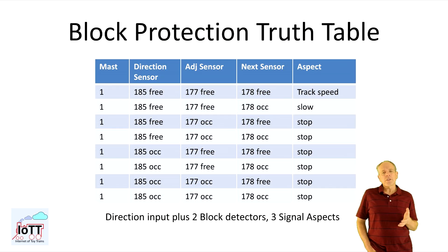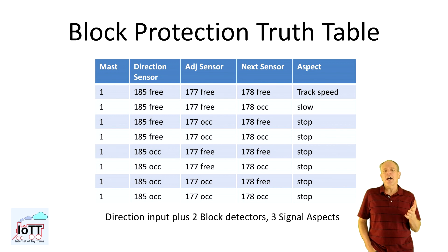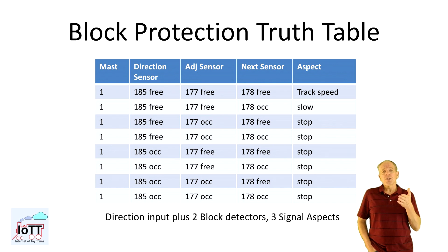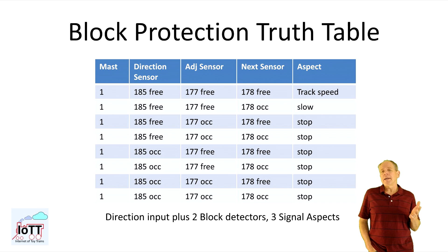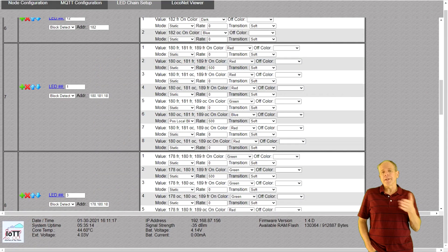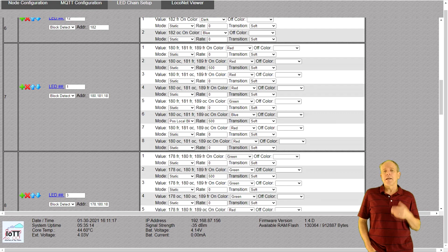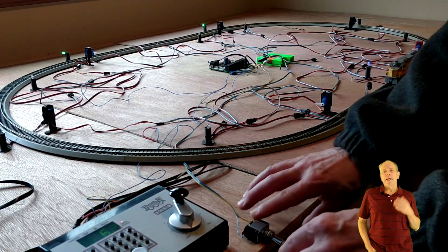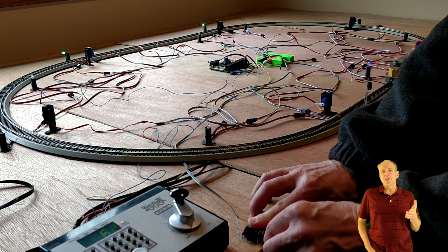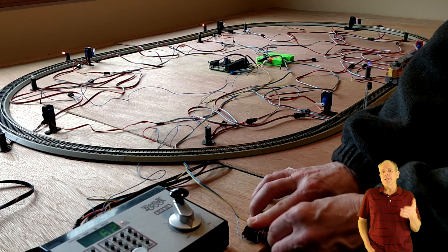With three block detector addresses it now has eight entries, of which half are set to stop just because of the direction input. Again I can set this up in the green hat for the servos and the blue hat for the light signals. And here we go — APB for the double-track system, with signals showing three aspects and protecting two blocks behind the train.